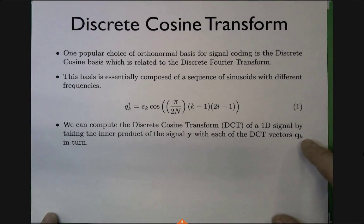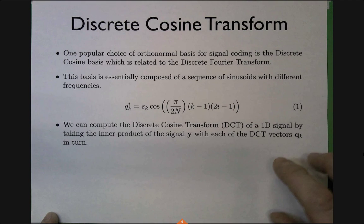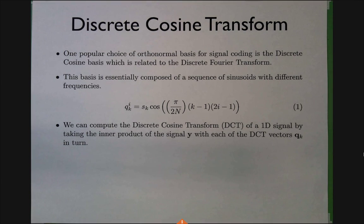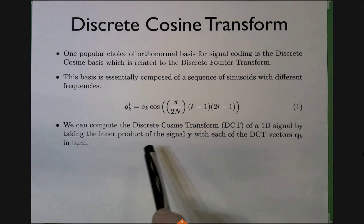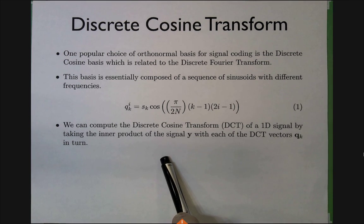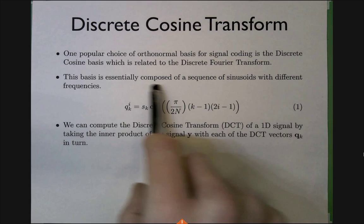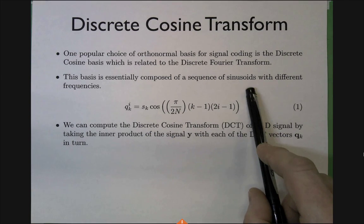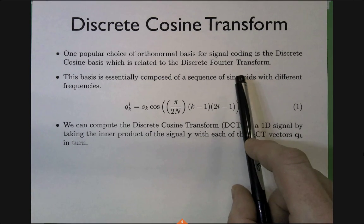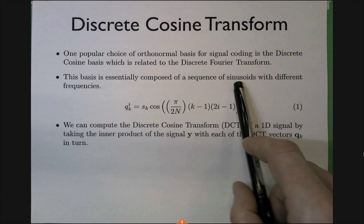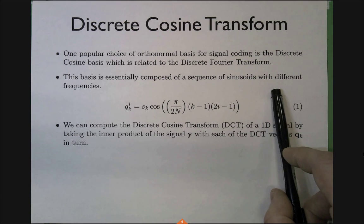So let's look at the magical transformation that does the localization in your frequency domain — that's the Discrete Cosine Transform, which you'll be playing with in your next project. The basis is quite interesting: it's just a sequence of cosine-type curves with different frequencies.